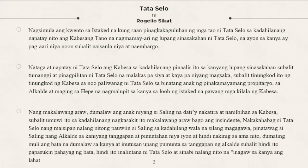Sa kadahilanang pinapalis siya sa kanyang lupang sinasakahan, tumanggi at pinagpilitan ni Tataselo na malakas pa siya at kaya pa niyang magsaka. Tinungkod-tungkod siya ni Kabeza sa noo. Paliwanag ni Tataselo sa binatang anak ng pinakamayamang propietaryo, sa alkalde, at maging sa hepe na nagmalupit sa kanya sa loob ng staked — pawang mga kilala ng Kabeza.